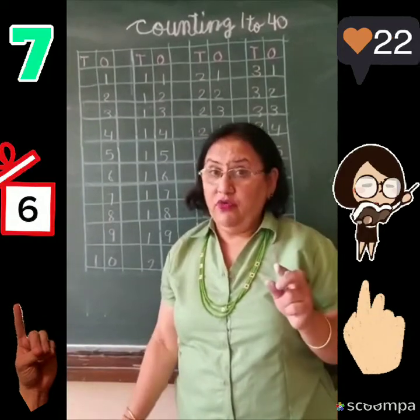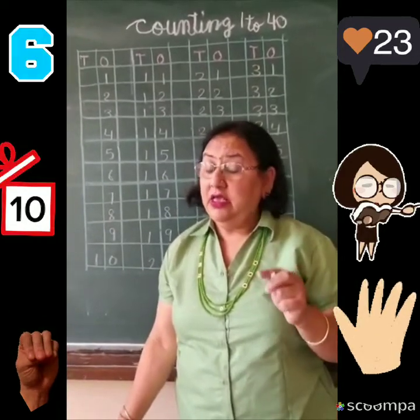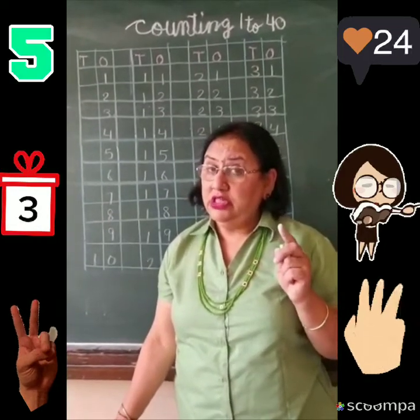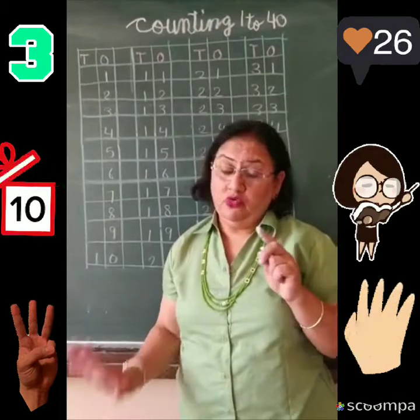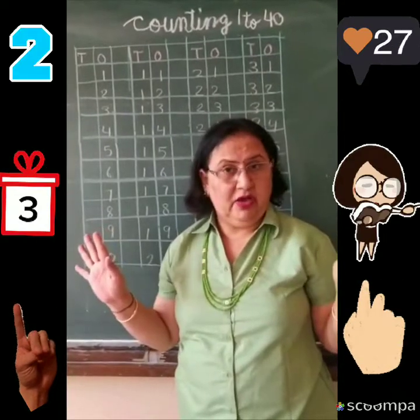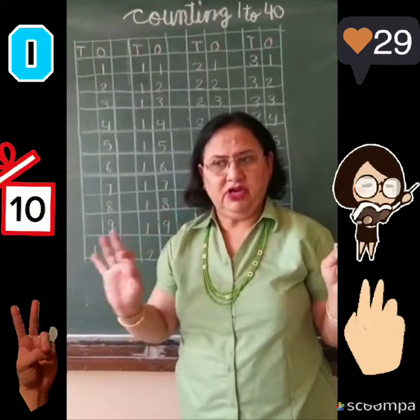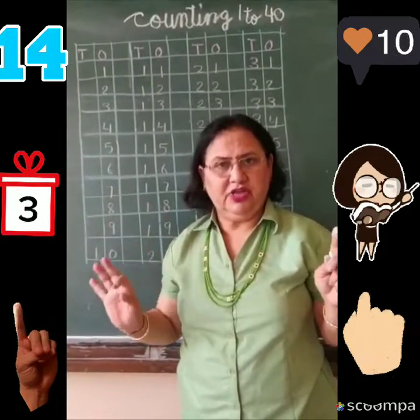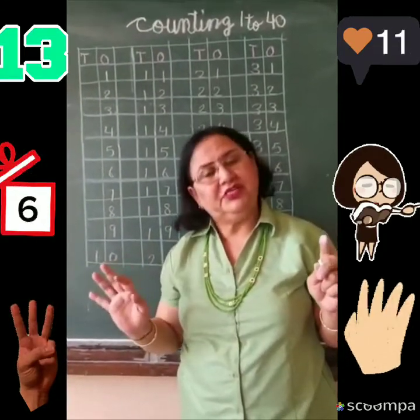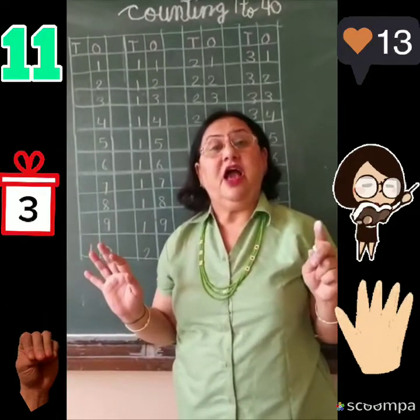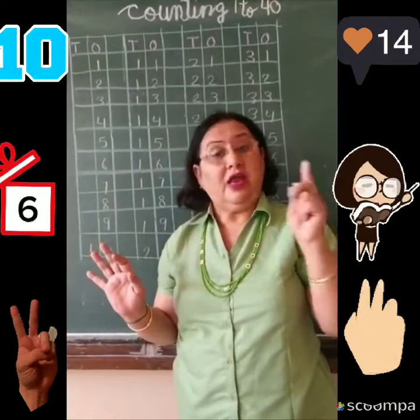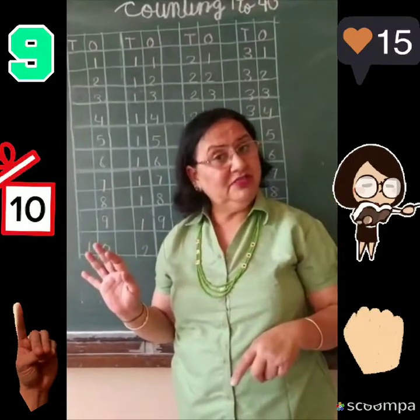And don't forget — isko three one nahi, thirty one bolenge; three two nahi, thirty two bolenge. Koi bhi nahi bolega 'three one'. Direct: thirty one, thirty two, thirty three, thirty four, thirty five, thirty six, thirty seven, thirty eight, thirty nine. Nine ke baad number change.